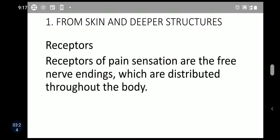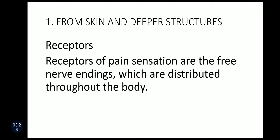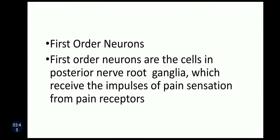The pathway from skin and deeper structures involves a receptor, first order neuron, second order neuron, and third order neuron reaching the center. The receptors of pain sensation are free nerve endings distributed throughout the body. The first order neurons are cells in the posterior nerve root ganglia, which receive impulses of pain sensation from the pain receptors.